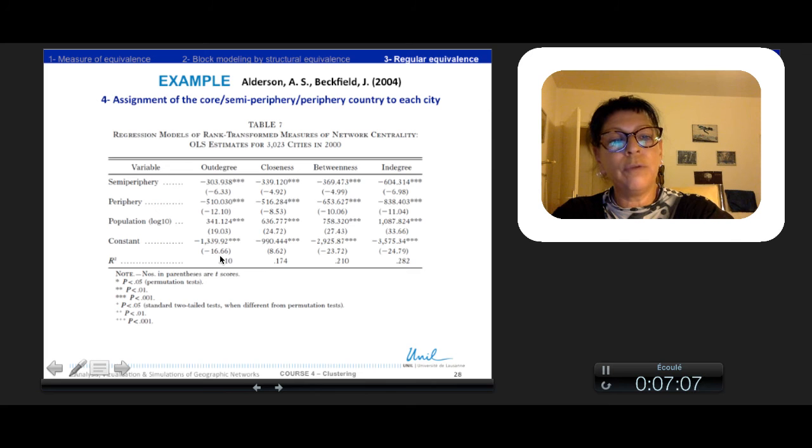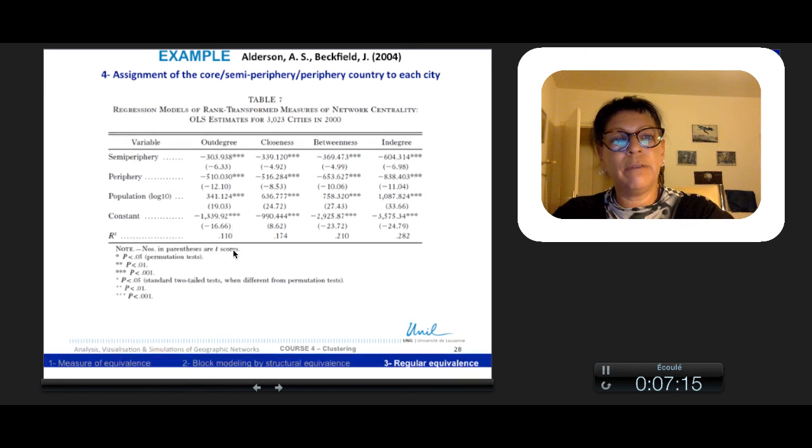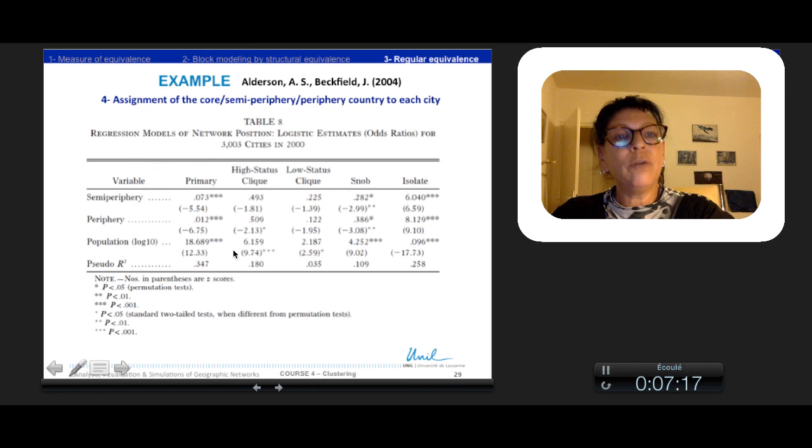Crossing directly the different statuses—primary, clique, snobs, and isolated—they cross with semi-periphery and periphery and keep population as a control variable. So they implement a logistic model combining a permutation test and a two-tailed test.